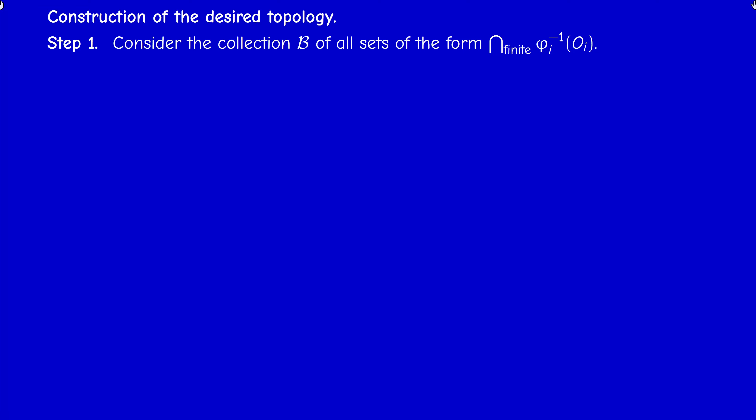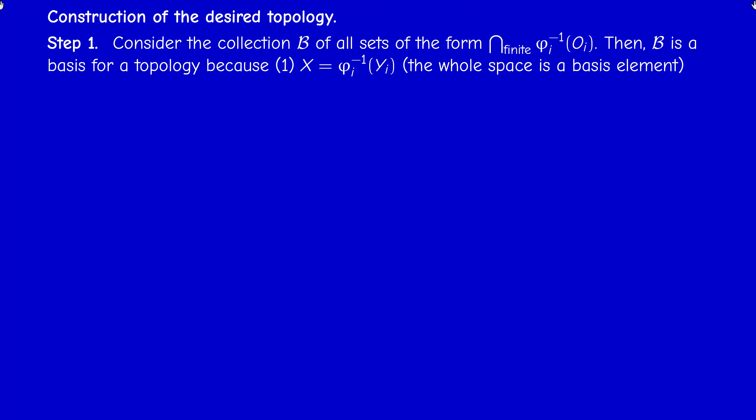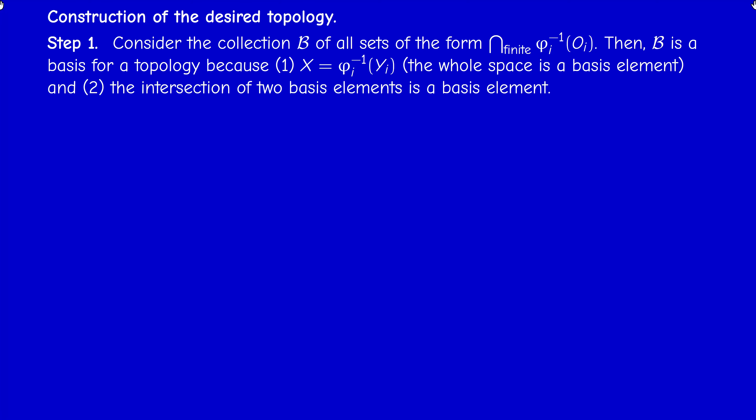Here's the construction. We consider the collection B of all sets that are finite intersections of sets of the form phi_i⁻¹(O_i). We claim this is a basis for a topology. It satisfies two conditions: first, for any point x in the set we can find a basis element containing it; second, the intersection of two basis elements is again a basis element. The whole space is itself a basis element, since the inverse image of Y_i under phi_i is all of X. When we intersect finitely many elements of this form with another finite intersection of elements of this form, we still get a finite intersection of elements of this form.